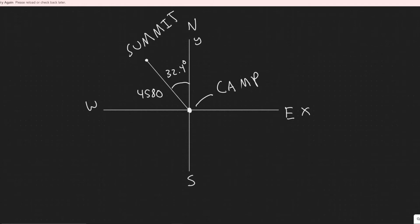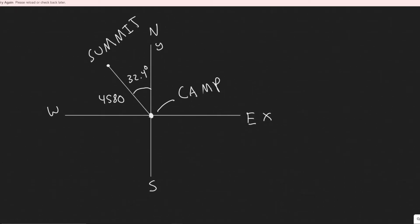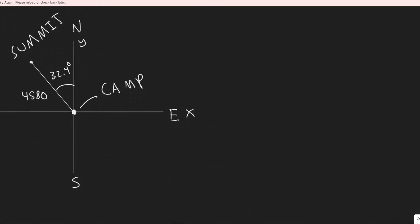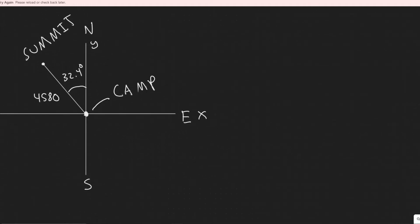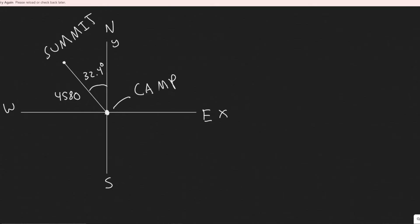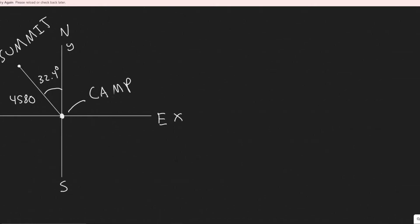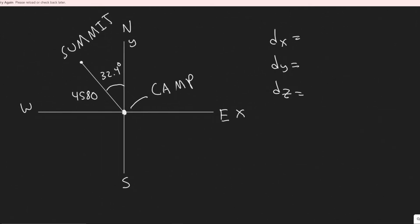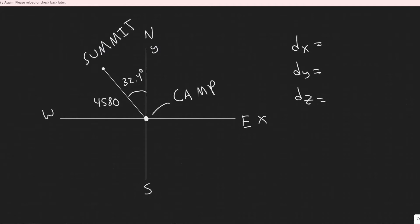You can imagine the summit is actually way higher up, but you just can't see it in this top-down view. Basically what we're trying to do is find the components and the magnitude. Since we're working in three dimensions, we have three directions for the components: displacement in x, displacement in y, and displacement in z.